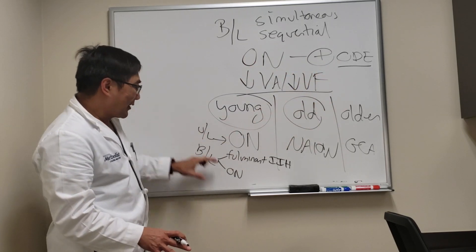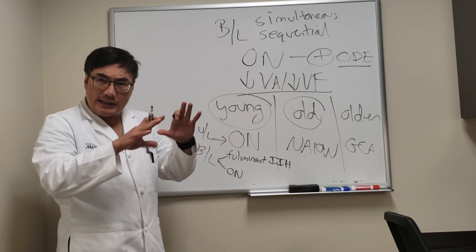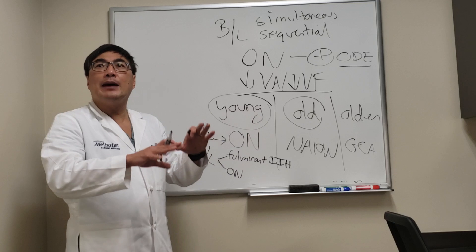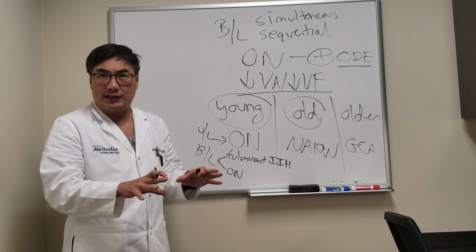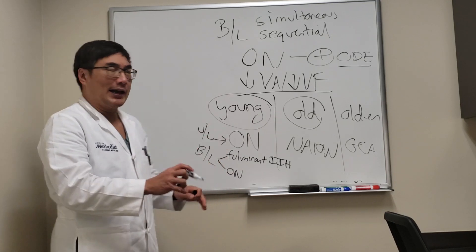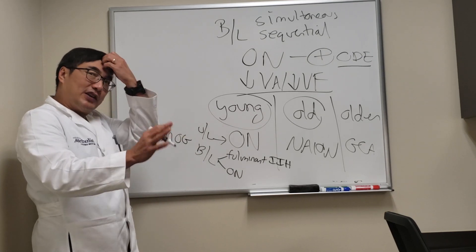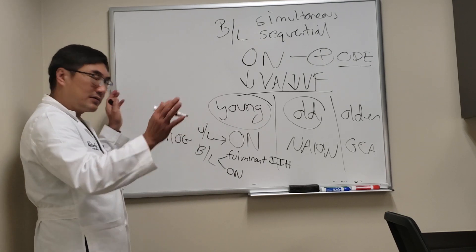When we have bilateral and a swollen disc, we're really thinking about the atypical optic neuropathies, and those are going to be MOG (myelin oligodendrocytic glycoprotein) and neuromyelitis optica, in addition to the usual suspects: sarcoidosis, syphilis, Lyme disease.